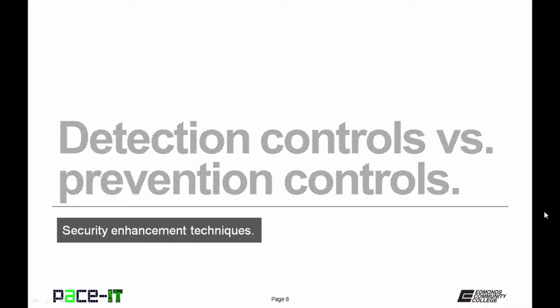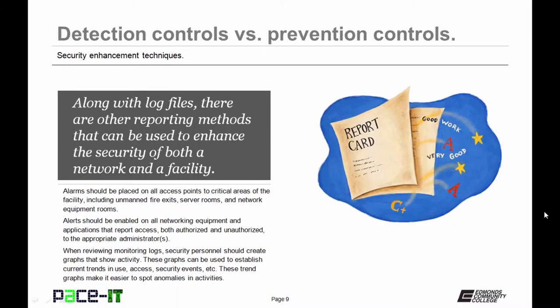It is now time for our discussion on detection controls versus prevention controls. Along with log files, there are other reporting methods that can be used to enhance the security of both a network and a facility. Alarms should be placed on all access points to critical areas of the facility, including unmanned fire exits, server rooms, and network equipment rooms. Alerts should be enabled on all networking equipment and applications that report access — both authorized and unauthorized — and those reports need to go to the appropriate administrators. When reviewing monitoring logs, security personnel should create graphs that show activity. These graphs can be used to establish current trends in use, access, security events, etc., and make it easier to spot anomalous activities.